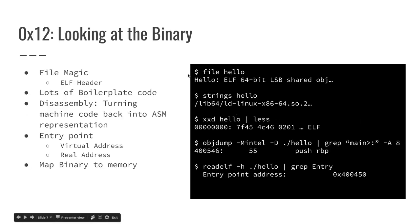What we have here are some example programs that ship with many Linux distributions that you can use to get a better look at the ELF file itself and see some information about it. The first program that's really important is the one called File. If you run File on that Hello program that we just compiled, File will tell you this is an ELF and it's a 64-bit binary.